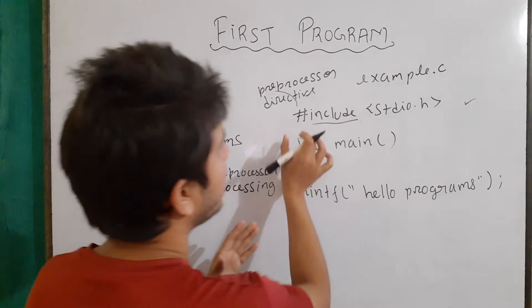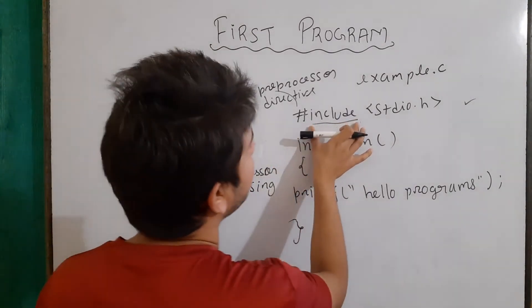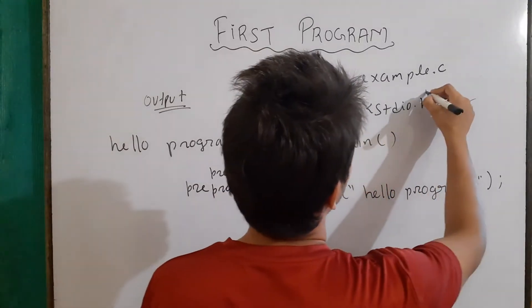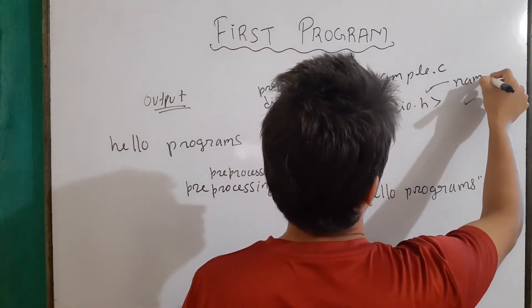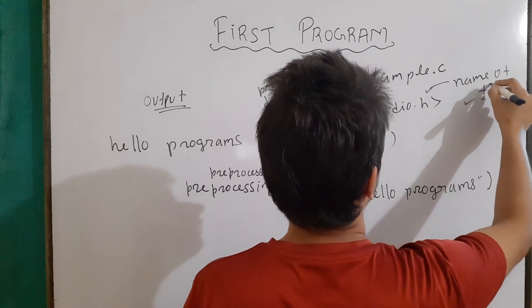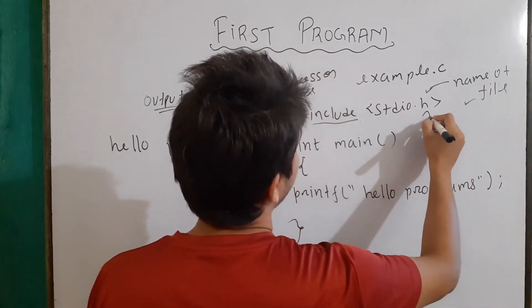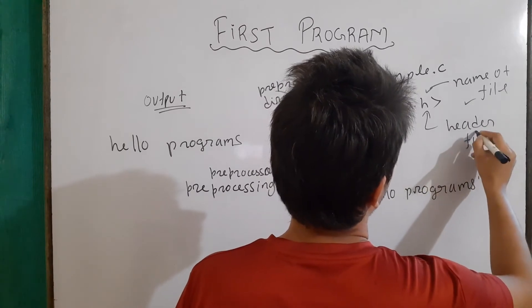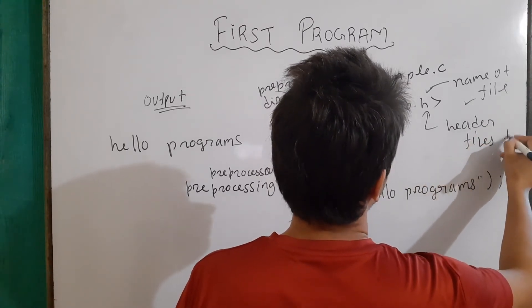So hash means we are telling our preprocessor, then include means to include a file and stdio.h is the name of our file. And these files are also known as the header files, header files with the extension of .h.